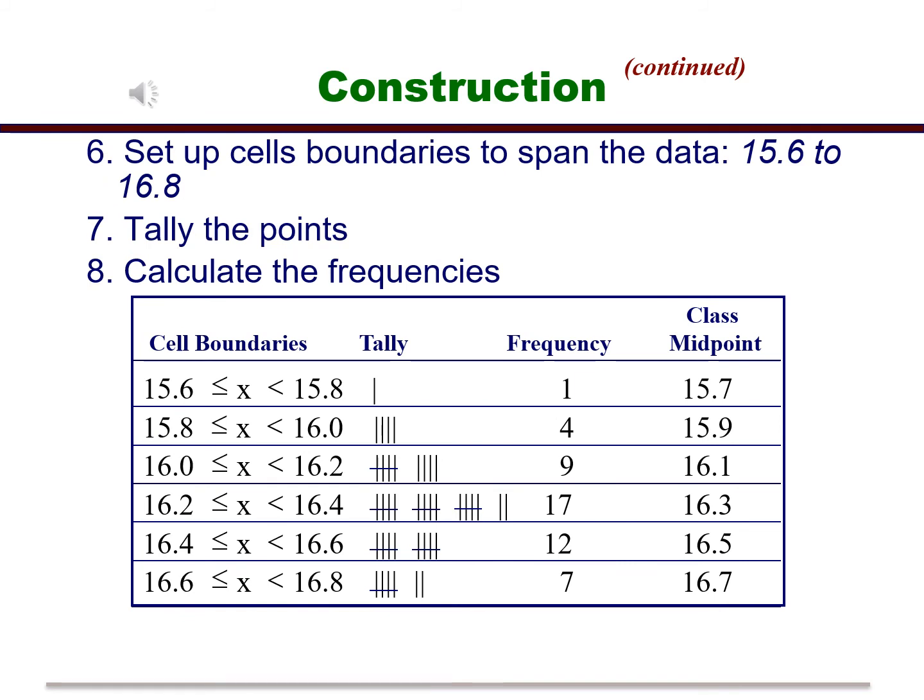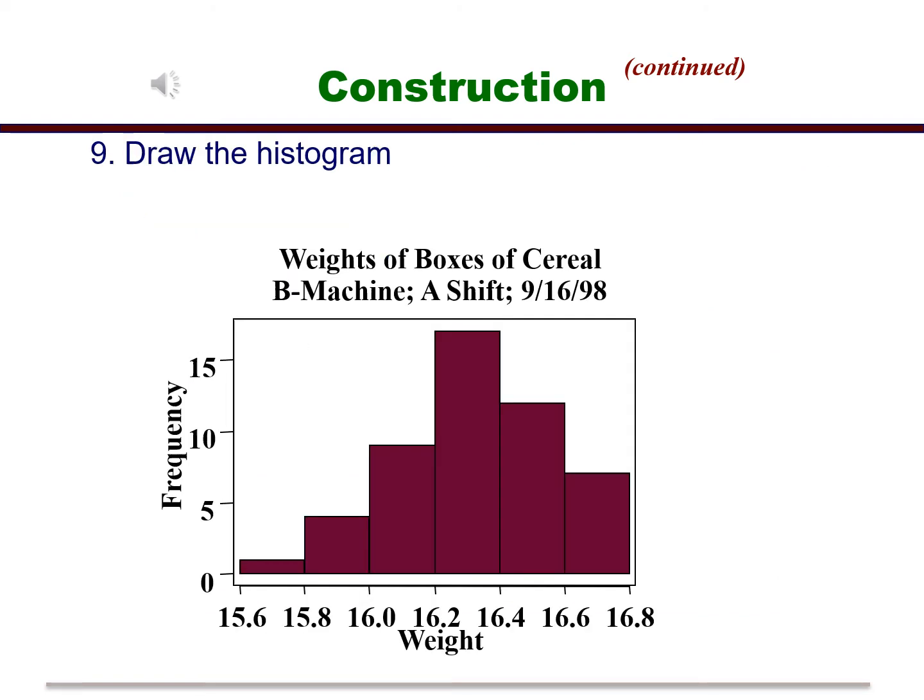Next, you divide the range into the cell boundaries to span the data from 15.6 to 16.8, tally the data points, and calculate the frequencies. Then we draw the histogram. The bar heights represent the frequency.